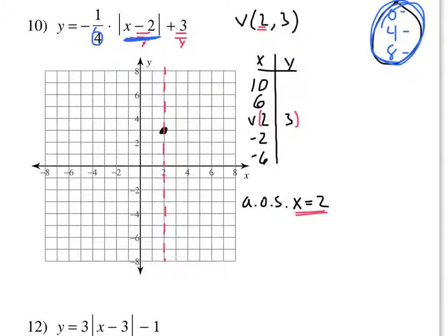If I plugged in those values: 10 minus 2 is 8, absolute value of 8 is 8, negative 1 fourth times 8 is negative 2, and negative 2 plus 3 is 1. For x equals 6: 6 minus 2 is 4, absolute value of 4 is 4, times negative 1 fourth is negative 1, and negative 1 plus 3 is 2. For x equals negative 2: negative 2 minus 2 is negative 4, absolute value is 4, times negative 1 fourth is negative 1, plus 3 is 2. And plugging in negative 6, we'll cut to the chase — I'm going to get 1.